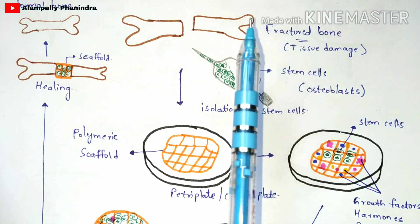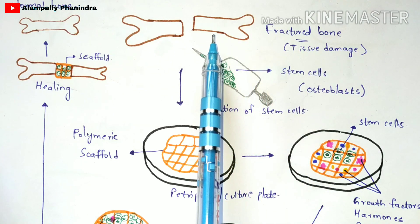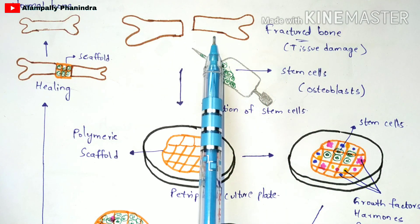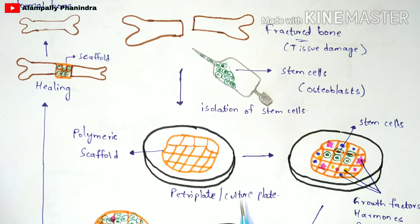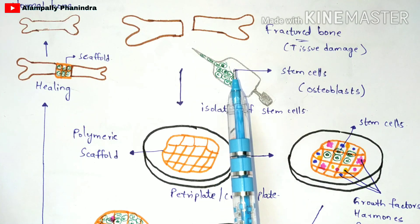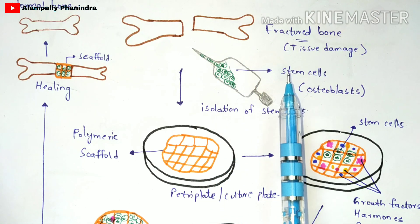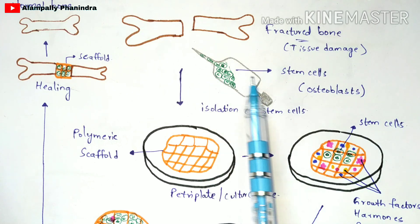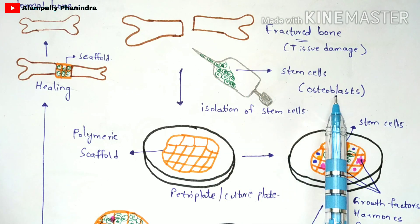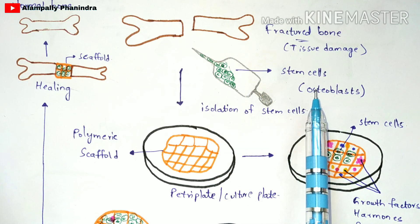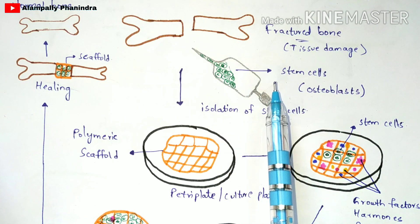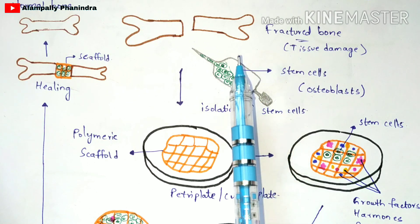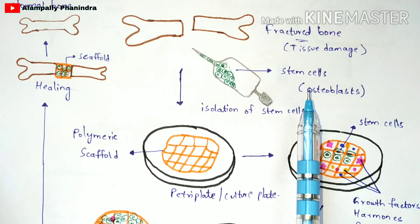From the fractured bone, you are going to isolate stem cells. The stem cells isolated from the bone are called osteoblasts — osteoblasts are the cells related to bone. So from this fractured bone, you isolate the osteoblasts.